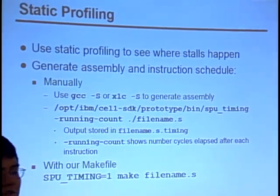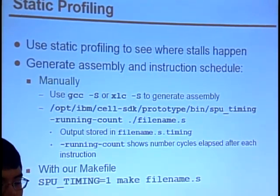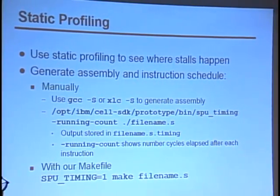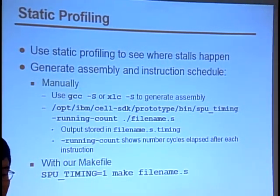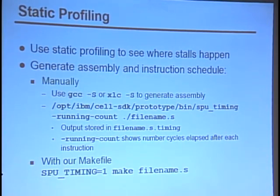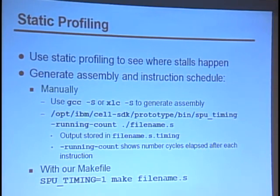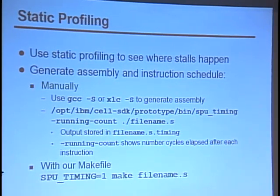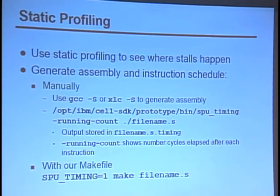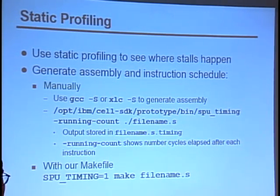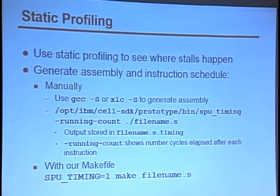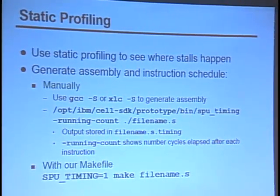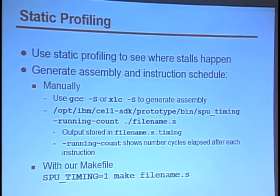We're going to use static profiling tools to figure out where stalls happen. First, we need to generate the assembly and the instruction schedule. You can use GCC dash S — the same flag works with XLC — to generate the assembly. Then we have a utility called SPU timing, which runs on the cell and tells you the instruction schedule. It takes in your assembly file and tells you exactly when each instruction in that assembly gets scheduled. If you call it with dash running_count, it will give you the running count of clock cycles at each stage — the last number tells you how long your program took to run in clock cycles. It writes output to a file of the same name but with dot timing at the end.